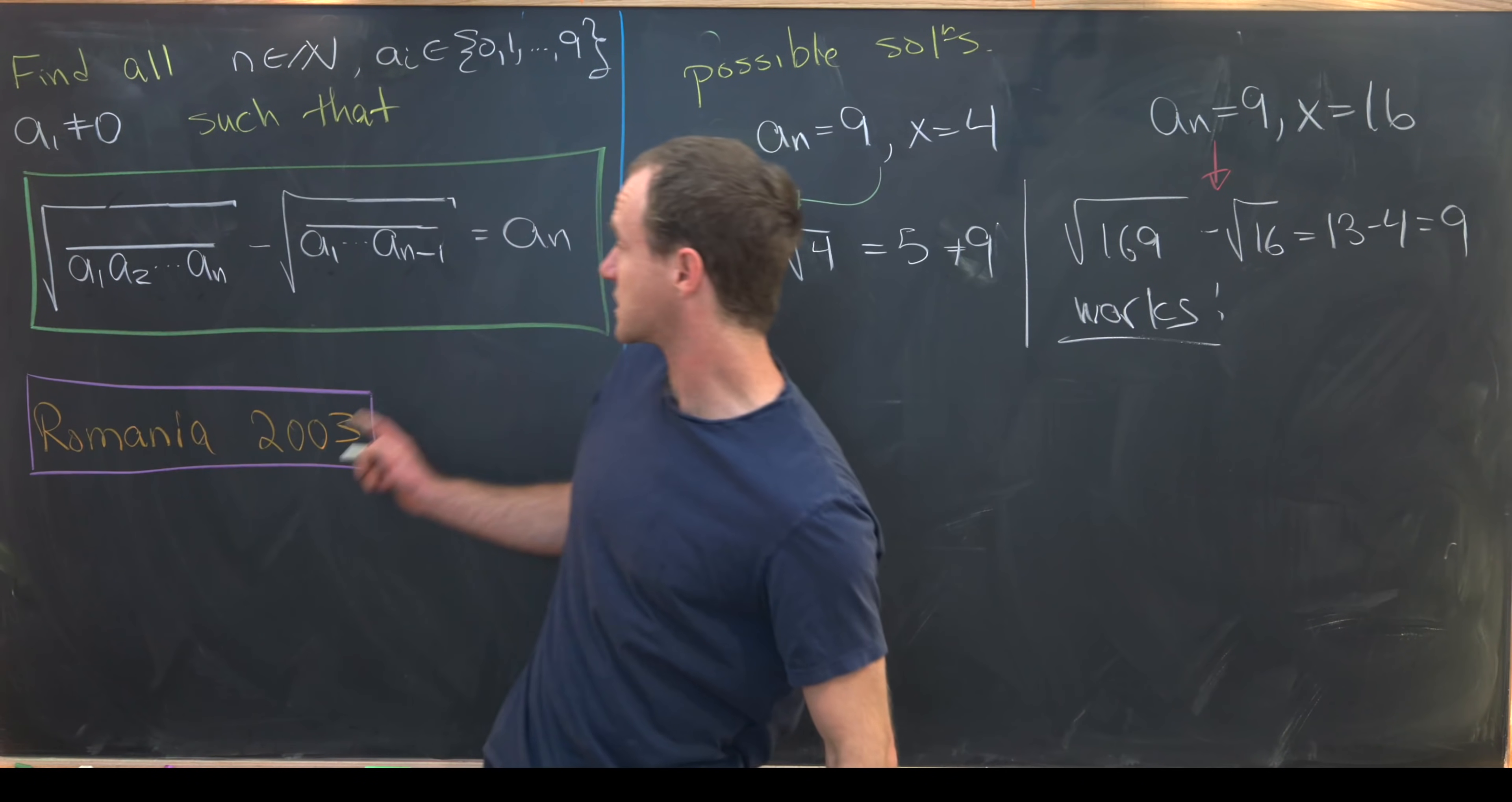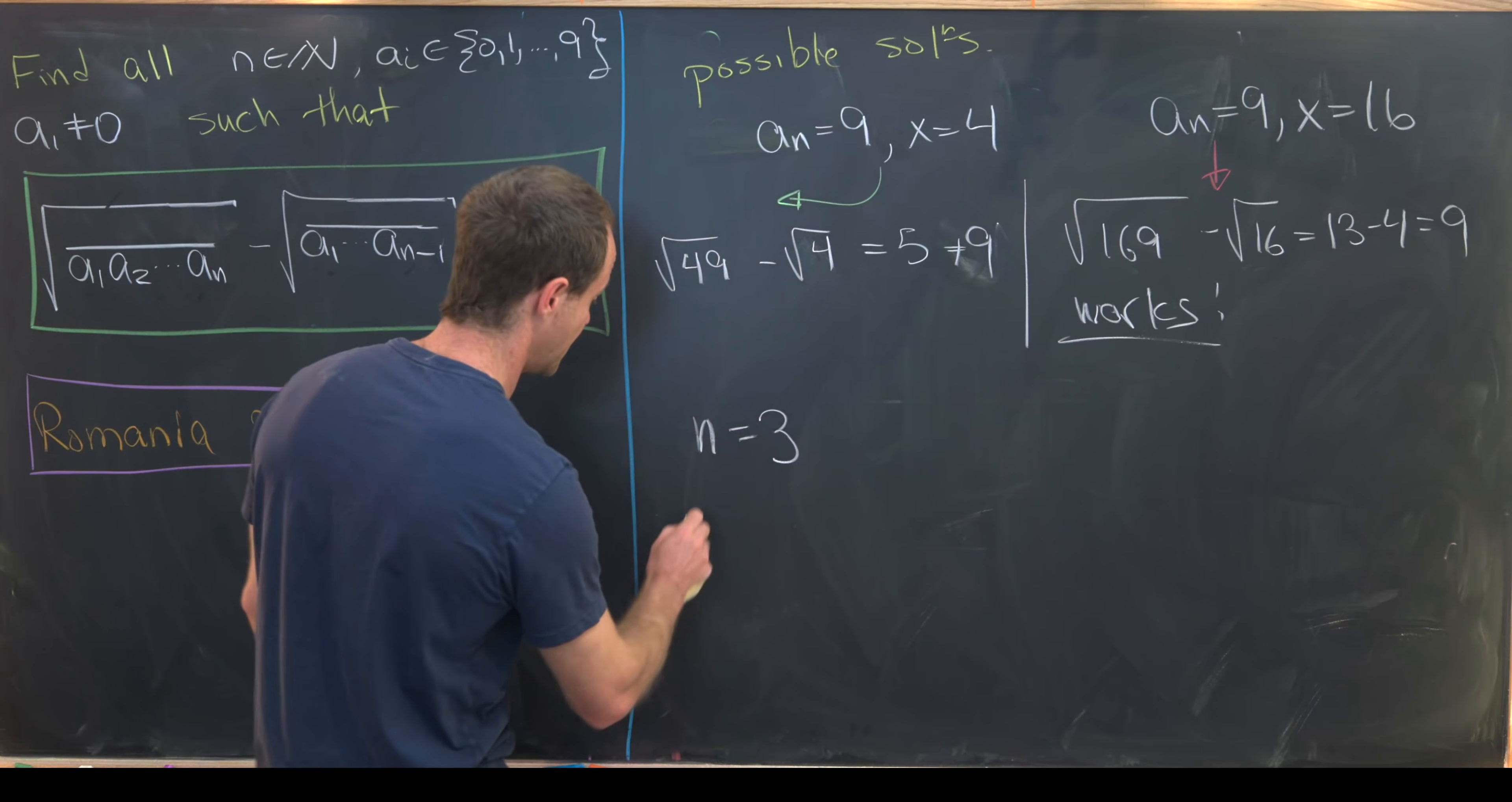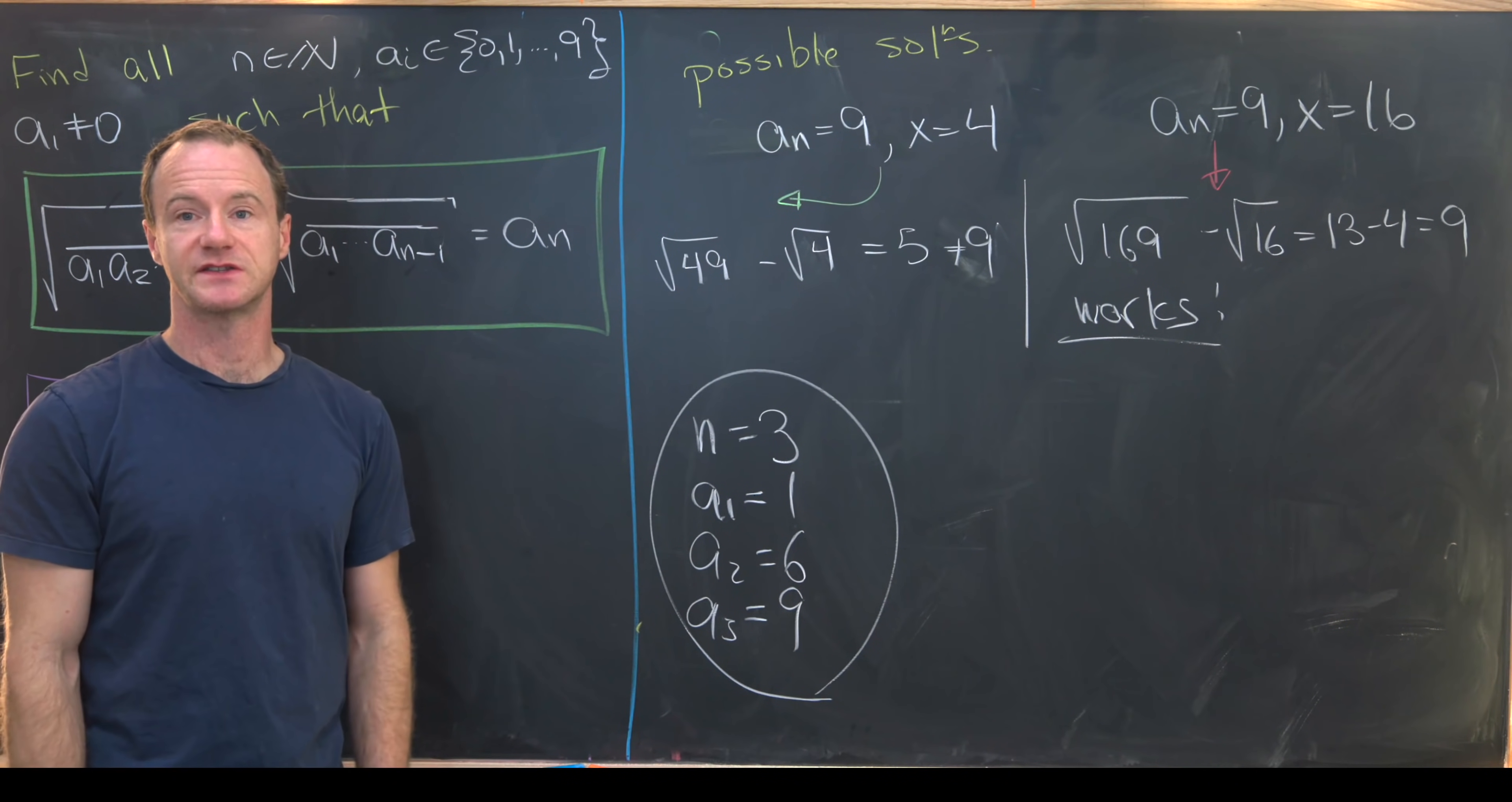But now let's go back to our statement of our problem to see exactly what's asked for. We're asked for this value of n and then these digits. So that means n is equal to 3 because we've got a three-digit number here. And then a1 is equal to 1, a2 is equal to 6, and a3 is equal to 9. Okay, and that's our final answer. And that's a good place to stop.